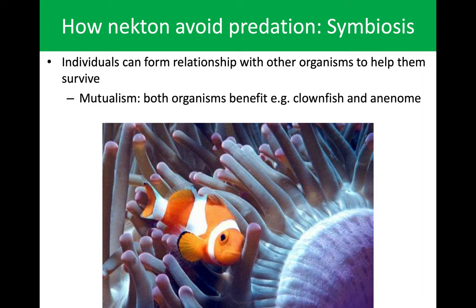Another one we think about is mutualism — when both organisms are benefiting. The classic example is a clownfish and an anemone. The clownfish doesn't get stung by the anemone, so it seeks protection inside where predators do get stung. Meanwhile, the clownfish will scare off butterfly fish that potentially feed on the anemone. And by swimming inside the anemone, they're generating a current which helps pass food through for the anemone. So everybody benefits in this situation.